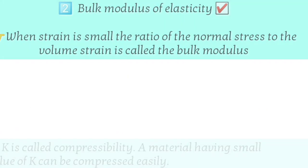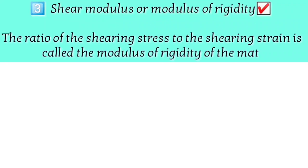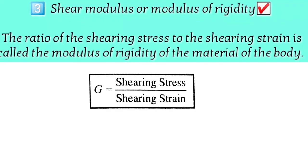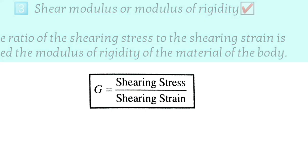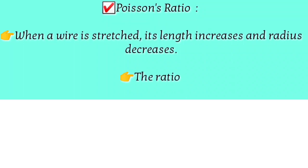Shear modulus (modulus of rigidity) is the ratio of shear stress to shear strain. Shear stress is force per unit area, and shear strain is x divided by L, or simply tan theta.